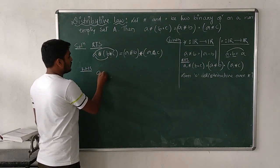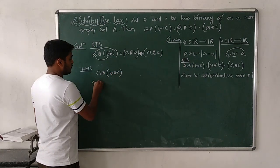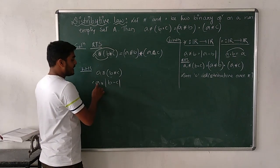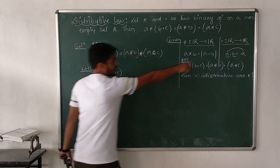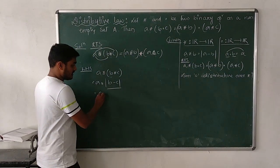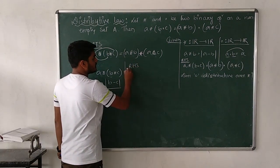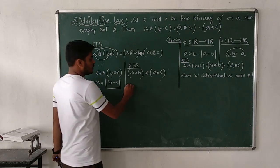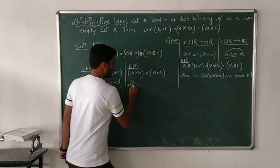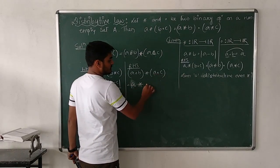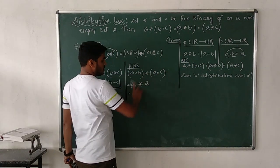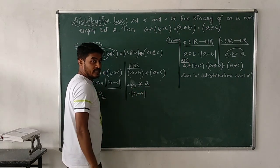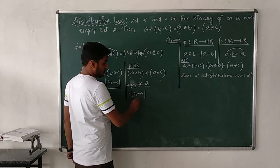Left-hand side: a • (b ★ c) = a • |b − c|. Since a • b = a (first term), a • |b − c| = a. Right-hand side: (a • b) ★ (a • c) = a ★ a. Since a • b = a and a • c = a, we get a ★ a = |a − a| = 0. So left-hand side = a and right-hand side = 0, which are not equal.